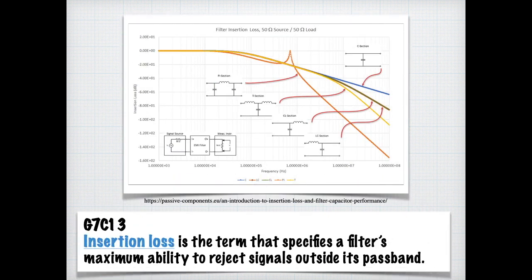So insertion loss is talking about the attenuation or the amount of energy that's lost by the filter just being present in the circuit. For the exam, you need to know that insertion loss is a term that specifies the filter's maximum ability to reject signals outside its band pass.